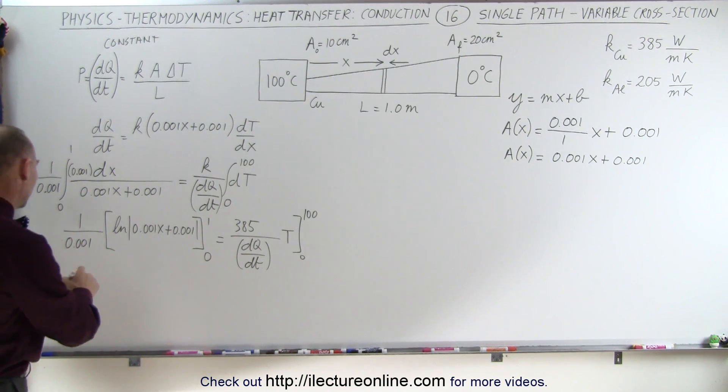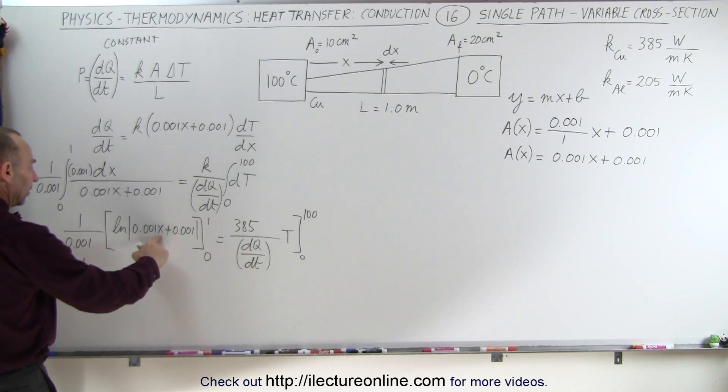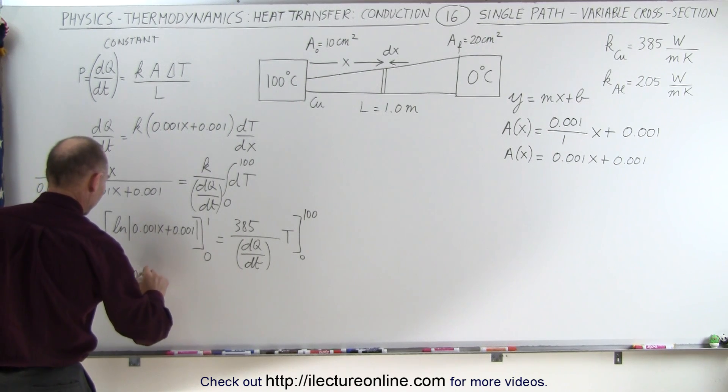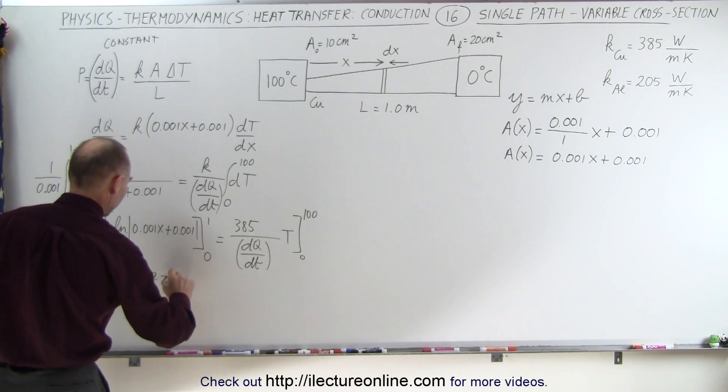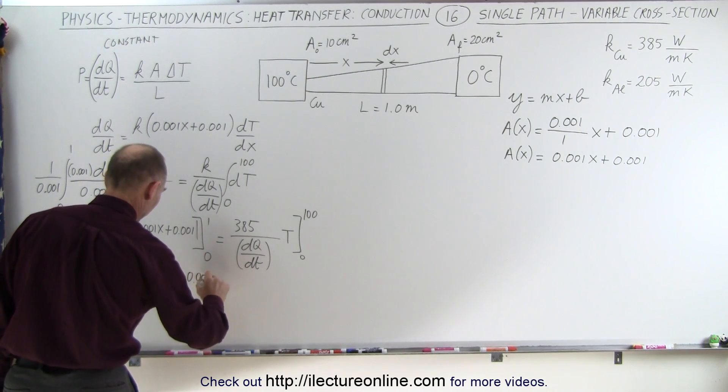On the left side, when we plug in the limits, we get the following. Plug in the upper limit, so this becomes the natural log of 0.002 minus the natural log when plugging in the lower limit of 0.001.